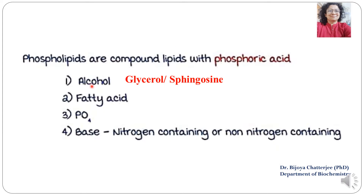Apart from the phosphoric acid group, phospholipids also have an alcohol group. The alcohol may be glycerol or sphingosine, and to the alcohol is esterified a fatty acid — there may be one, two, or more fatty acids esterified to the alcohol groups. They also have a phosphate group and a base. This base may be of two types: nitrogen-containing or non-nitrogen-containing. We are going to see in more detail about the different types of alcohol and bases that make phospholipids.